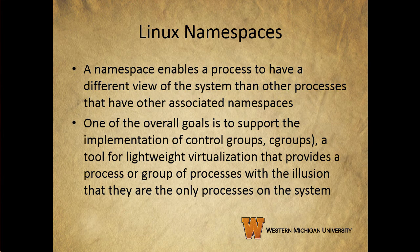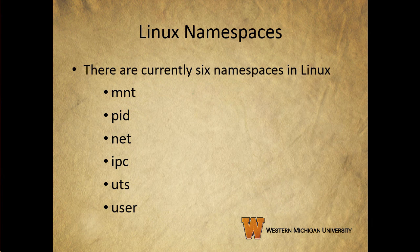Finally, we'll briefly talk about Linux namespaces. A namespace enables a process to have a different view of the system than other processes that have other namespaces. One of the overall goals here is to support the implementation of control groups, also called cgroups, which is a tool for lightweight virtualization. What we're going to do is provide a process or group of processes with the illusion that they're the only processes on the system, so we can keep various processes in different namespaces from interfering with each other during runtime. This is a list of the standard namespaces currently in use in Linux. Please take a look at pages 185 and 186 in your textbook for a full discussion of Linux namespaces and how they work at the operating system level.